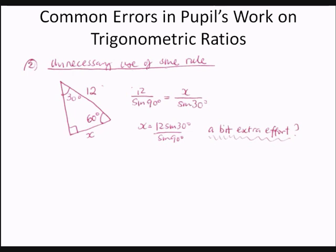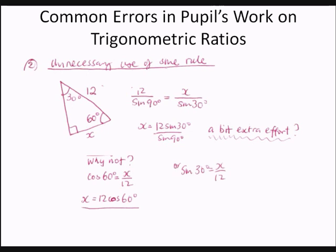Instead, we can simply use cosine 60 degrees equals x over 12, giving x equals 12 times cos 60 degrees. Alternatively, sine 30 degrees equals x over 12, so x equals 12 times sine 30 degrees — much more straightforward.